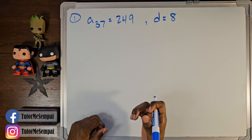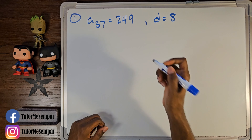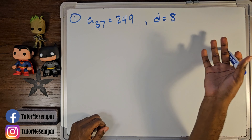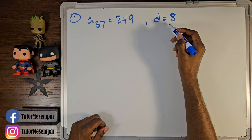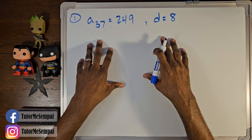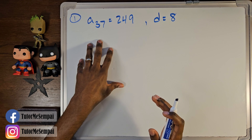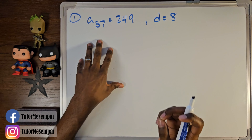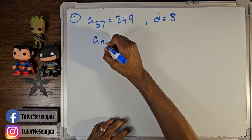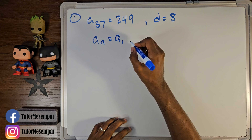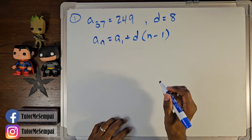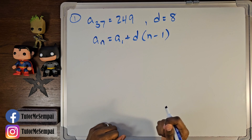Here we have a₃₇, or our 37th term, equals 249, and we know that d — the difference or distance between your two terms — is going to be 8. When you're trying to find your explicit formula and you're only given this little bit of information, the very first thing you want to do is write your general form of the explicit formula. That's going to be: aₙ = a₁ + d(n − 1). This is your general form of your explicit formula.